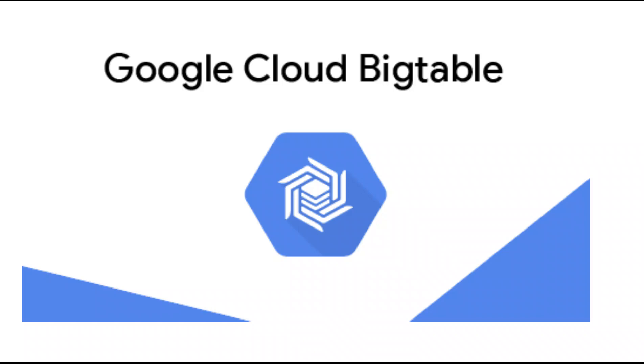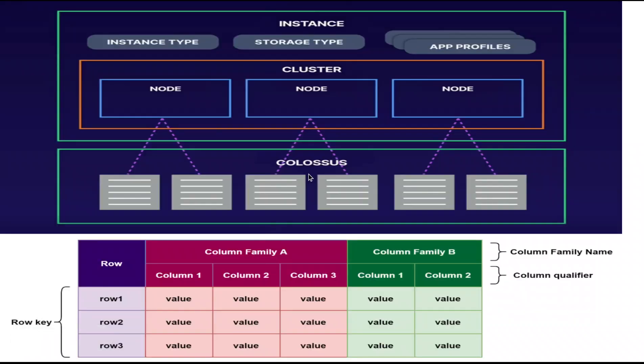Architecture-wise, the main thing is the instance. We have to select the instance type and storage type like HDD and SSD. If you need to create any application, we use the instance type and app profiles. Inside the instance we have a cluster in Bigtable. Each cluster has three to four nodes.